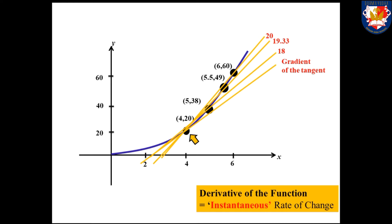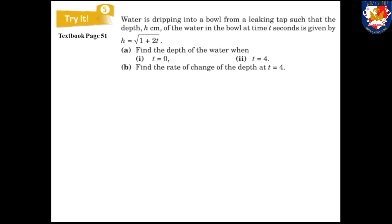This is what we call the instantaneous rate of change. Let's have an example. Water is dripping into a bowl from a leaking tap such that the depth h cm of the water in the bowl at time t seconds is given by h equals the square root of (1 + 2t). Part A: find the depth of the water when t equals 0 and t equals 4. Part B: find the rate of change of the depth at t equals 4.